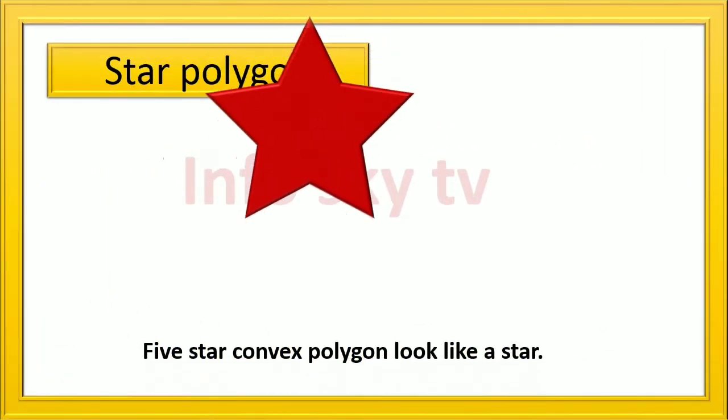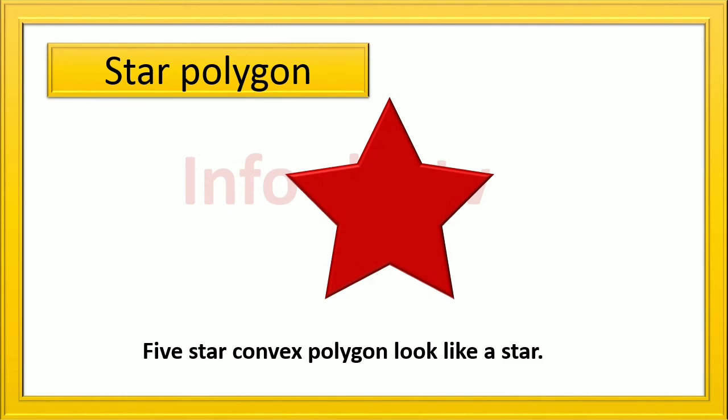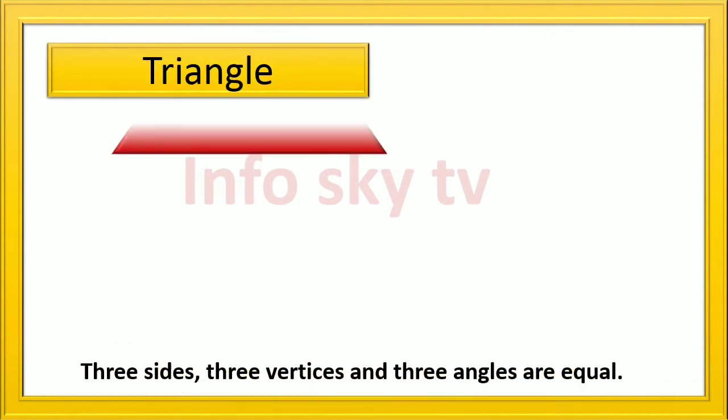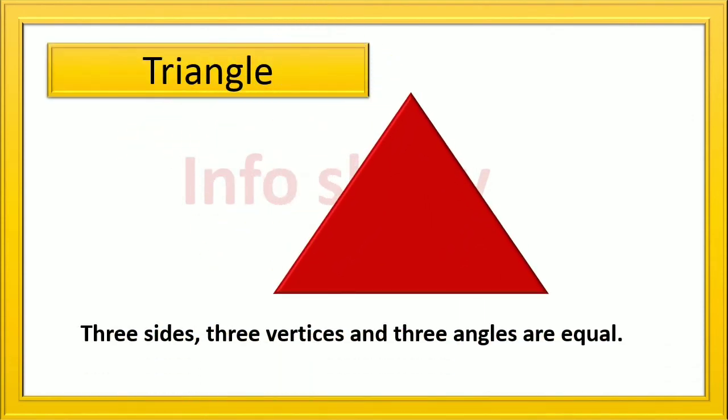Star Polygon: 5 star convex polygon look like a star. Triangle: 3 sides, 3 vertices and 3 angles are equal.